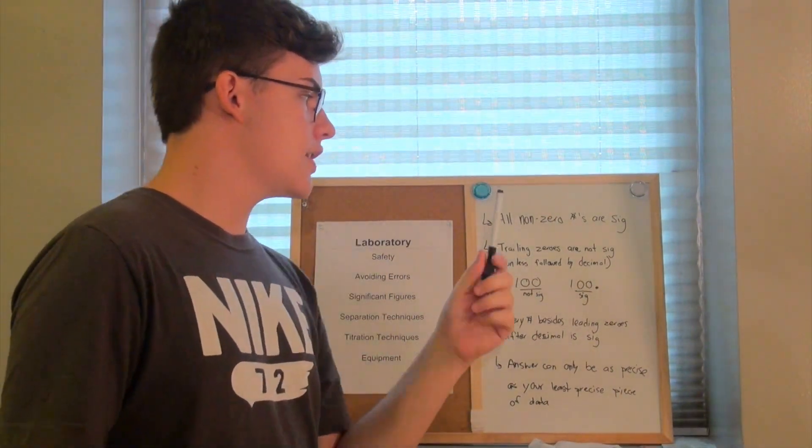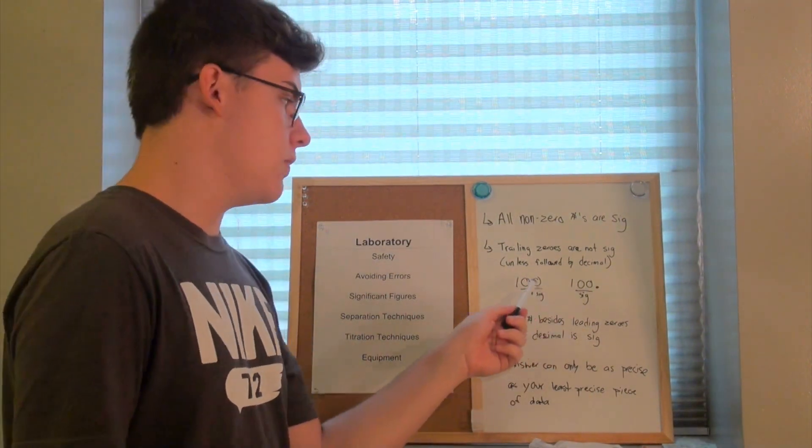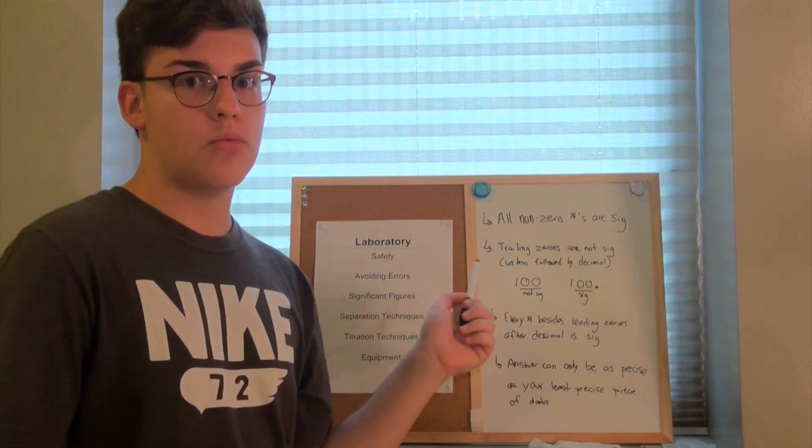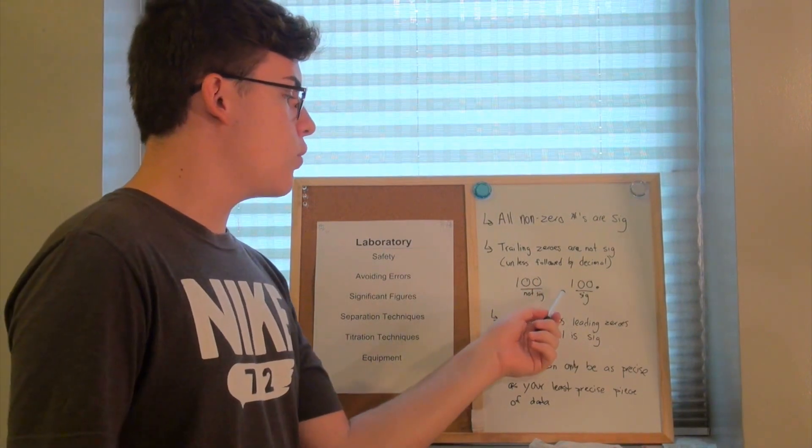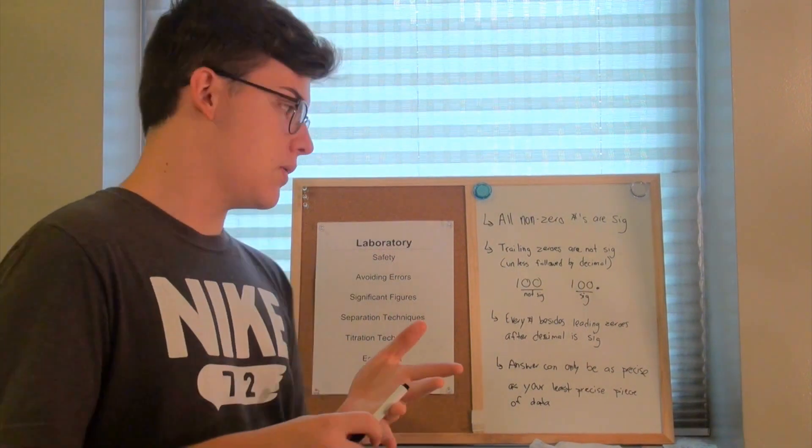Trailing zeros are not significant unless followed by a decimal. So the number 100 without a decimal only has one significant number, which is 1, but the number 100 with a decimal has three significant numbers: the 1, 0, 0.